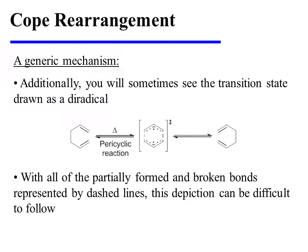Additionally, you will sometimes see the transition state drawn as a diradical. With all of the partially formed and broken bonds represented by dashed lines, this depiction can be a bit challenging to follow.